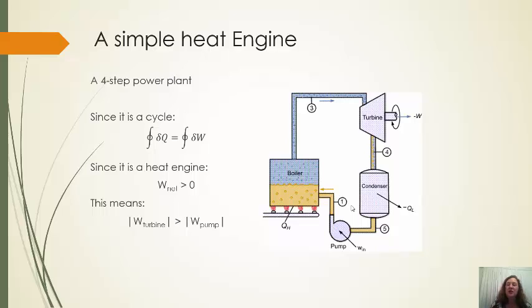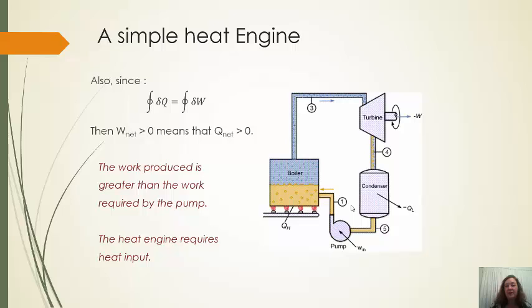Now, if it is a cycle, there's no net change in any of the state properties. So no net change in kinetic energy, potential energy, internal energy, enthalpy. So the net work over the course of the cycle is going to exactly equal the net heat over the course of the cycle. And since it's a heat engine, we know that we're going to produce power, which means that the work produced in the turbine is going to be more than is required in the pump. Now, a heat engine always requires heat input. Now, also, since net work equals net heat, that means that net heat transfer is always going to be positive. We require heat input and we get work output.